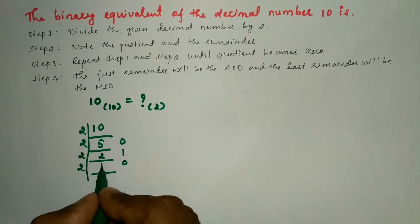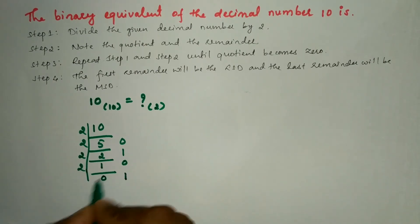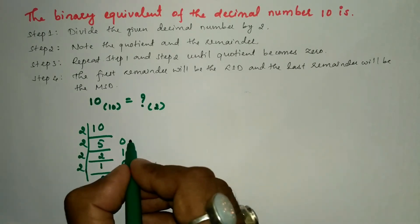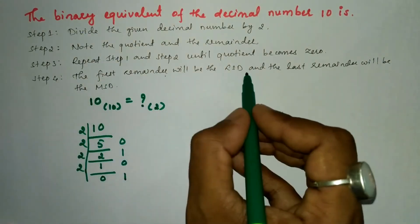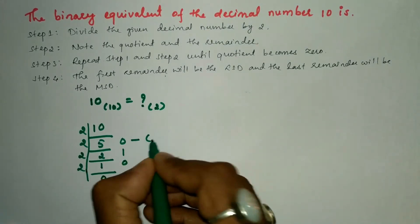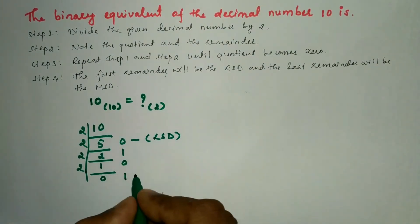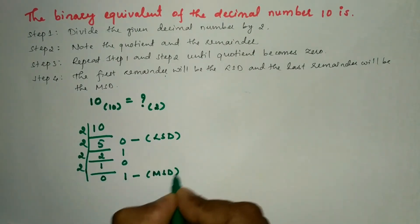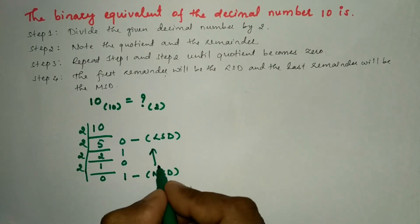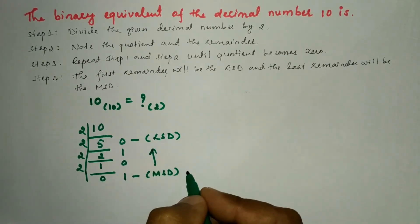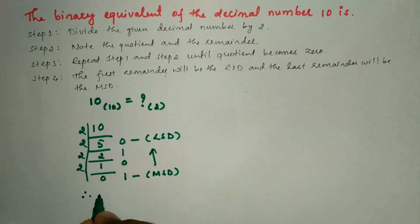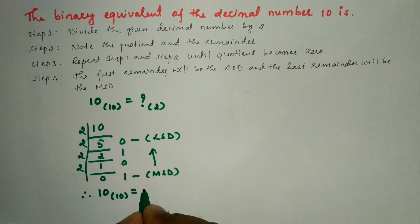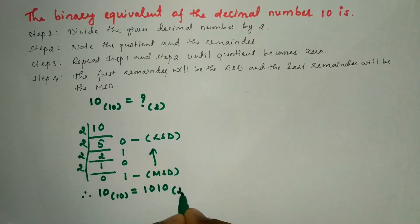As per the basic mathematical rule, if the numerator is less than the denominator, then the numerator acts as the remainder and the quotient becomes zero. So step four says the first remainder is the least significant digit and the last remainder is the most significant digit. Therefore, 10 to the base 10 is equal to 1010 to the base 2.